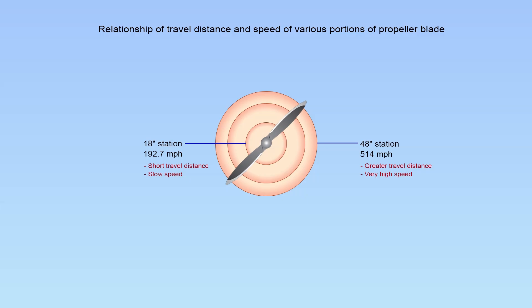You can now compare this to the speed of the propeller at station 48. By using the same formulas, you can determine that at station 48, the propeller is moving at 514 miles per hour.